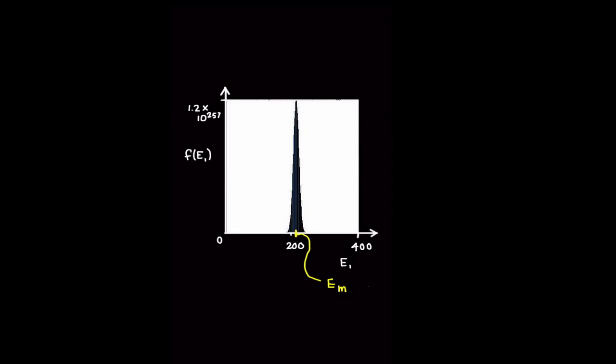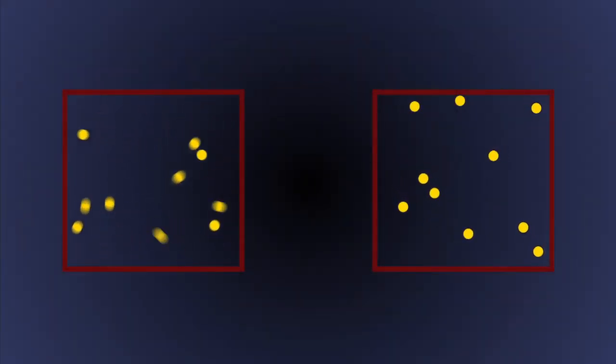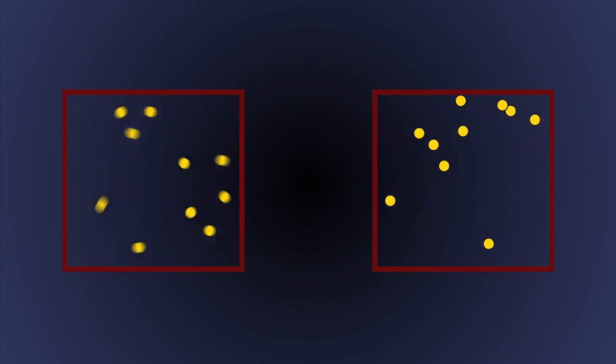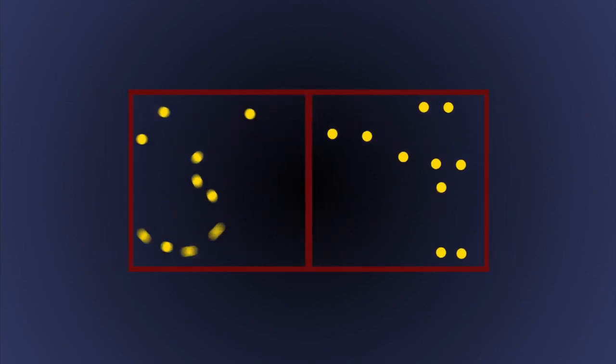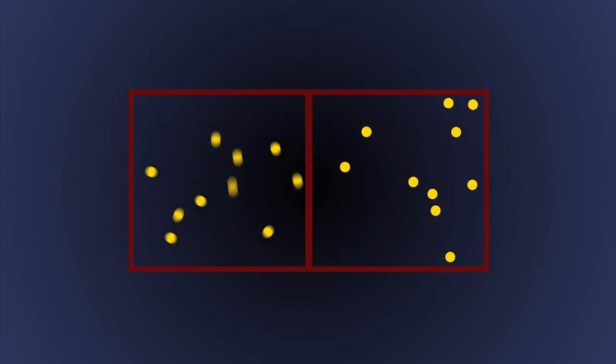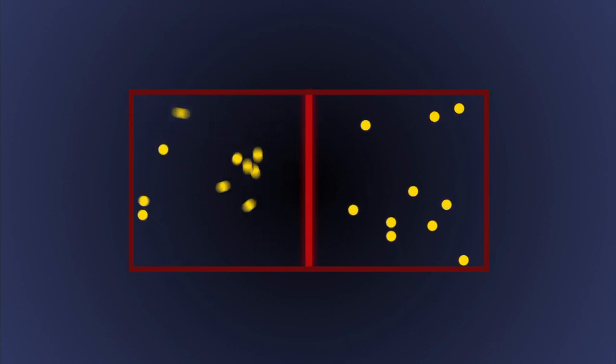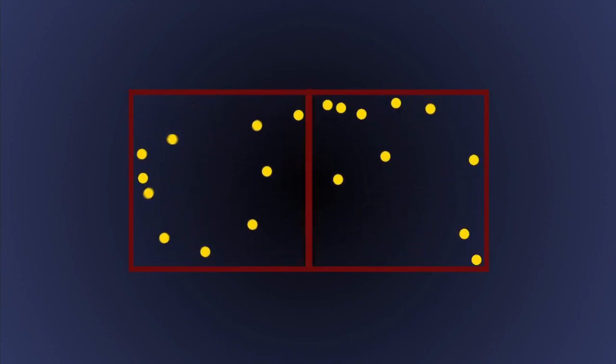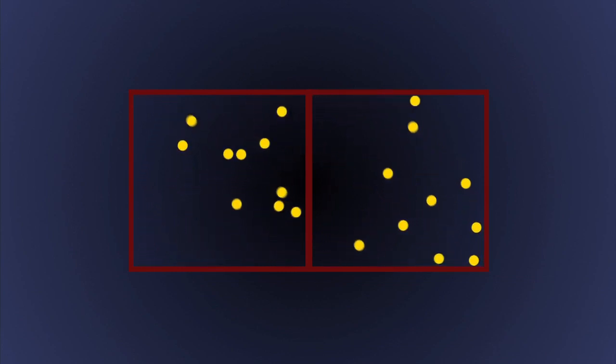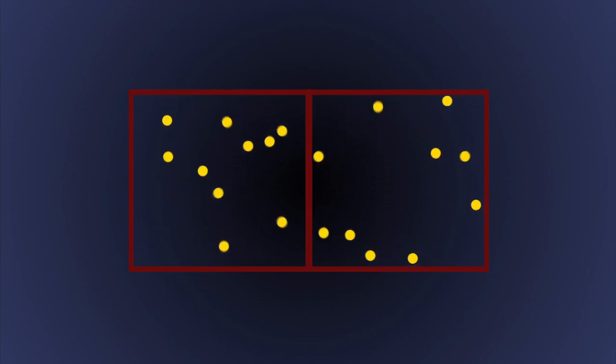So, on average, we expect the energy of box 1 to be very close to Em. But what happens if box 1 starts with some different energy, maybe an energy significantly different from Em? Statistically, because such a state is so much less likely, when contact between the boxes is made, the energy will redistribute over time towards the most likely state where box 1 has energy Em. This process of energy redistribution is called equilibration.